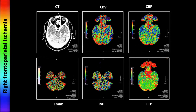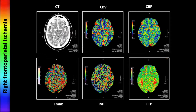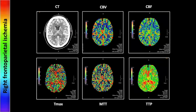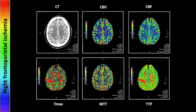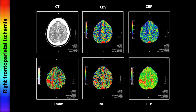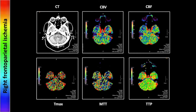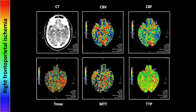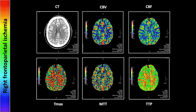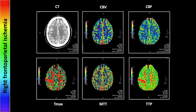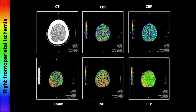So let's look at the cine images. The finding is subtle, though it is present on more than just the one cut. That is a case of right frontoparietal ischemia.